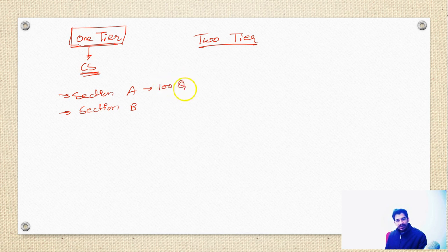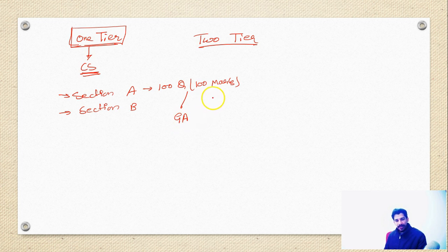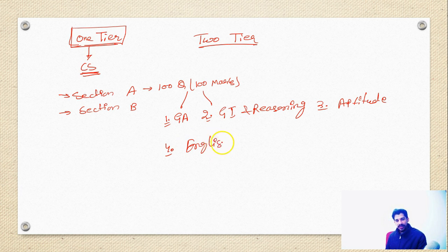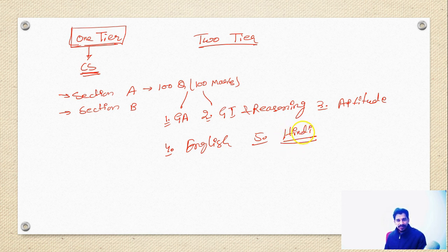Section A will have 100 questions worth 100 marks, divided into five sections: General Awareness, General Intelligence and Reasoning, Aptitude, English Comprehension, and Hindi Comprehension. Hindi comprehension is important — you need to prepare complete Hindi grammar (Vyakaran) for this examination, which is not typically asked in normal exams but is required here.